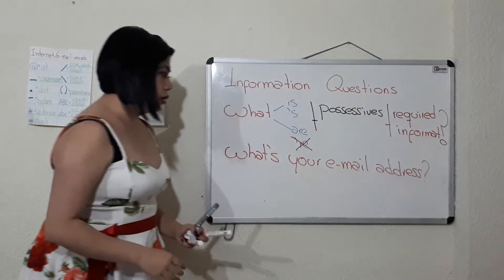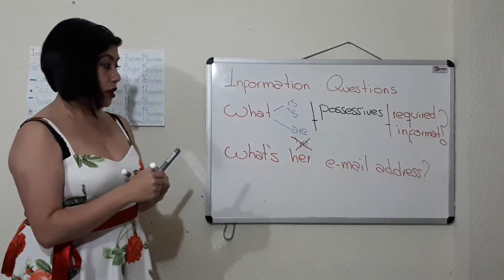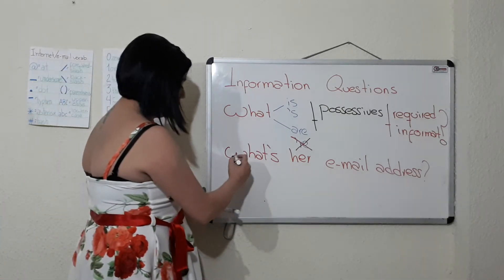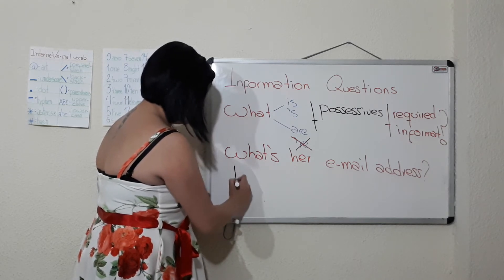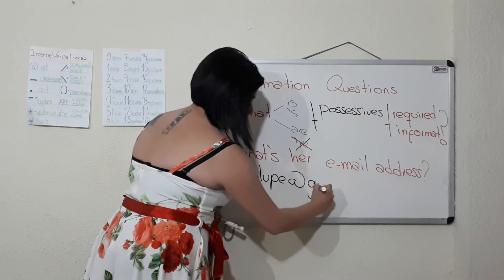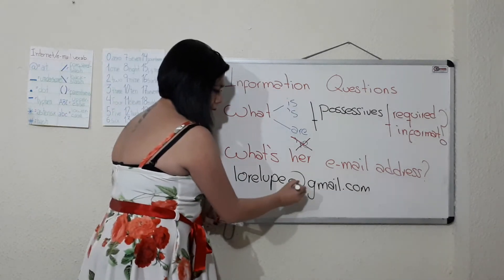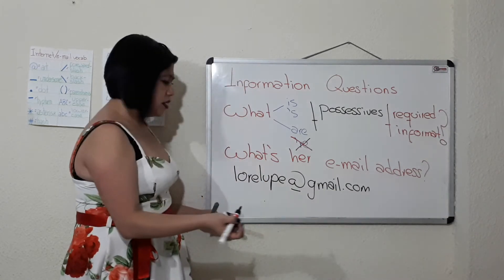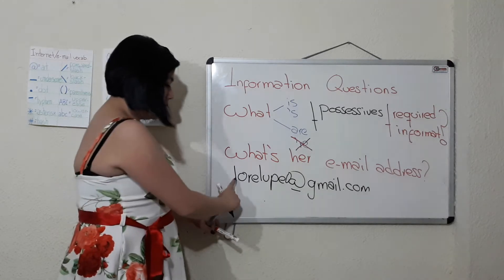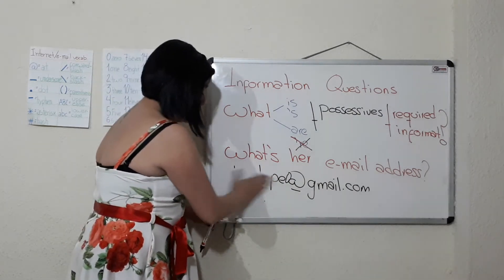So the question is 'What's your email address?' — and remember you can change the possessive: 'What's her email address?' You could answer: 'My email address is laurelupe at gmail dot com.' If you are using numbers you could say 'laurelupe zero at gmail dot com', or spell it out: l-o-r-e-l-u-p-e-zero at gmail dot com, according to your needs.